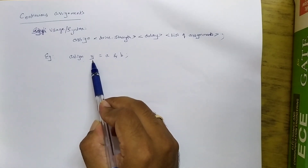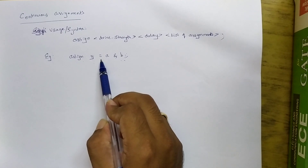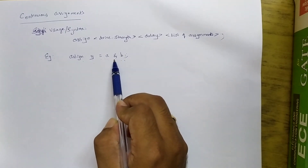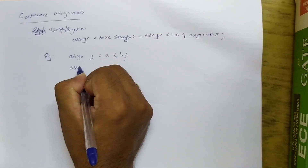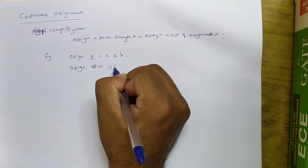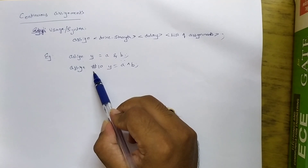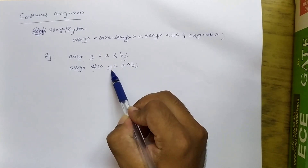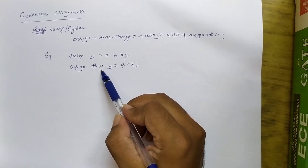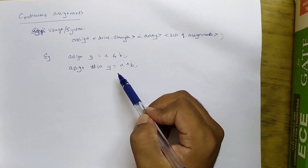'assign' is a keyword. Y is a variable, or operand, which will receive the value from the right-hand side expression. This in total we call the list of assignments. The equals sign is the assignment operator; A and B are operands, and an AND operation is happening. One more variation is: assign #10 Y = A | B; Here we have inserted a delay. After computation from the right-hand side, the value is assigned to Y only after 10 time units. These time units can be set to nanoseconds, picoseconds, and so on.